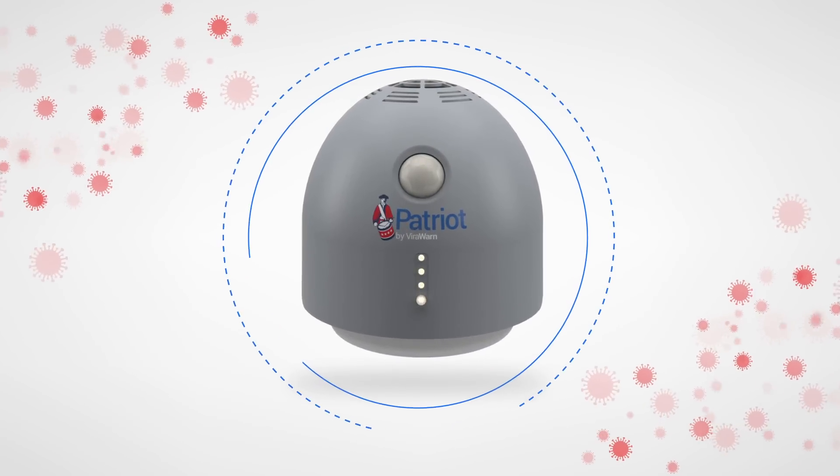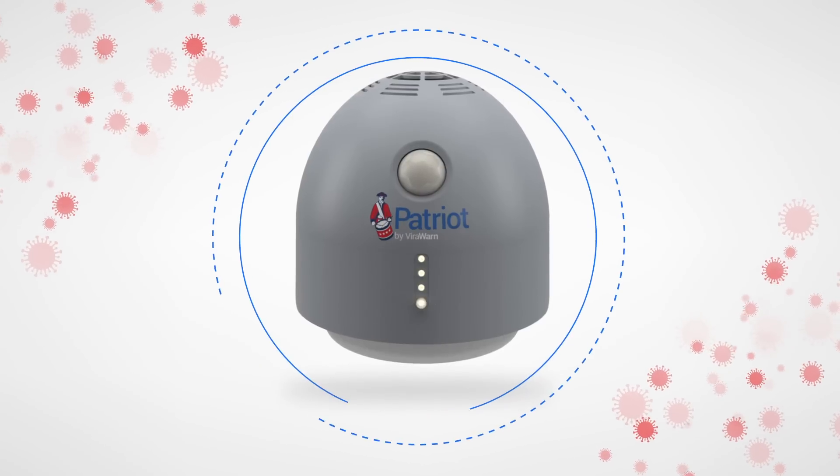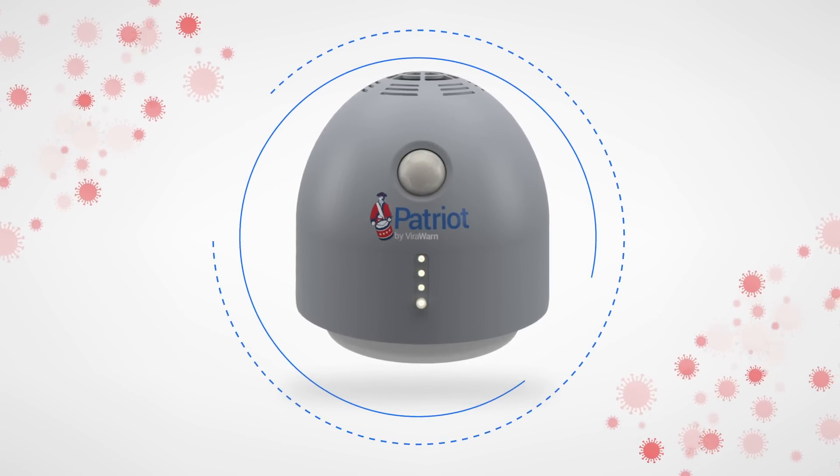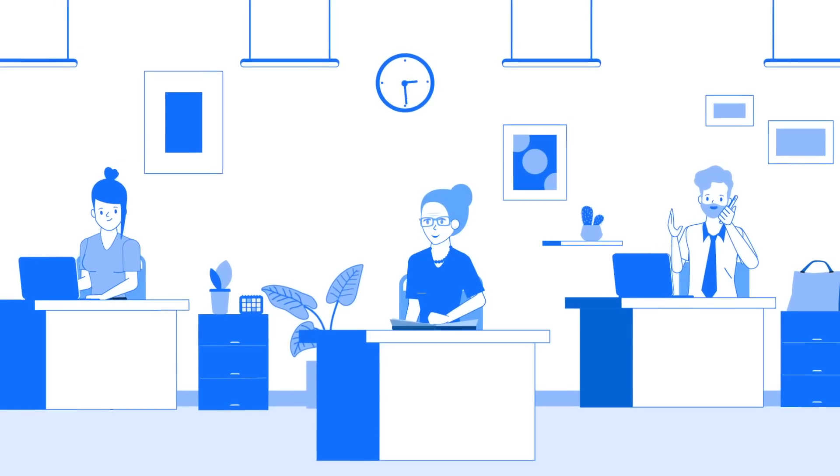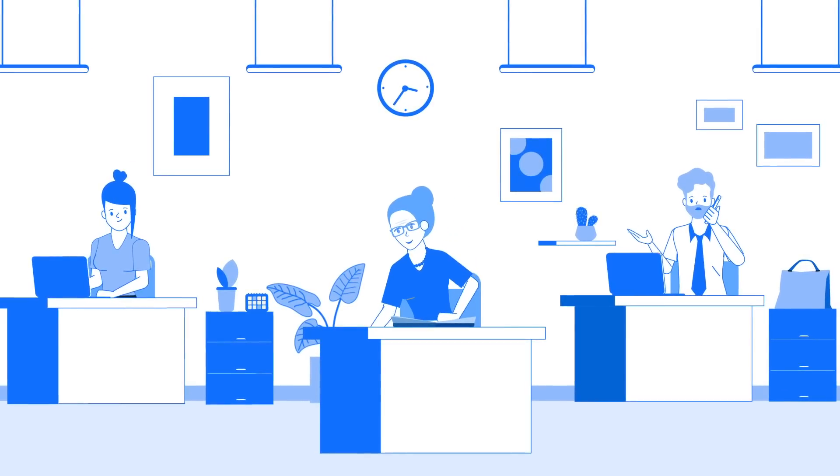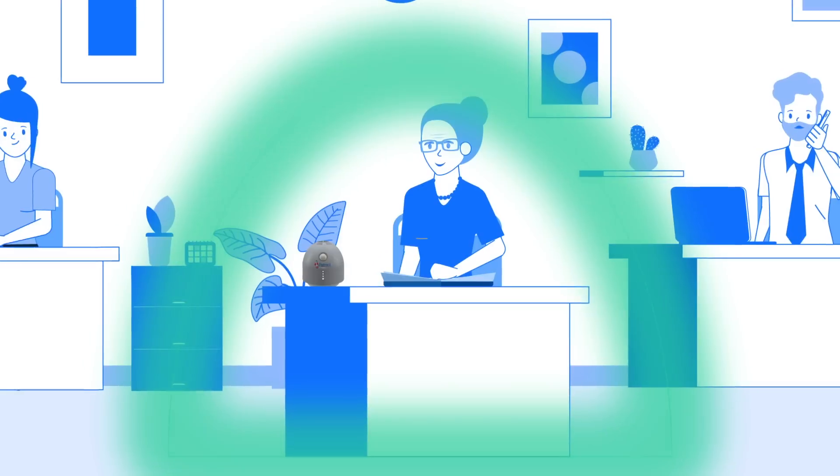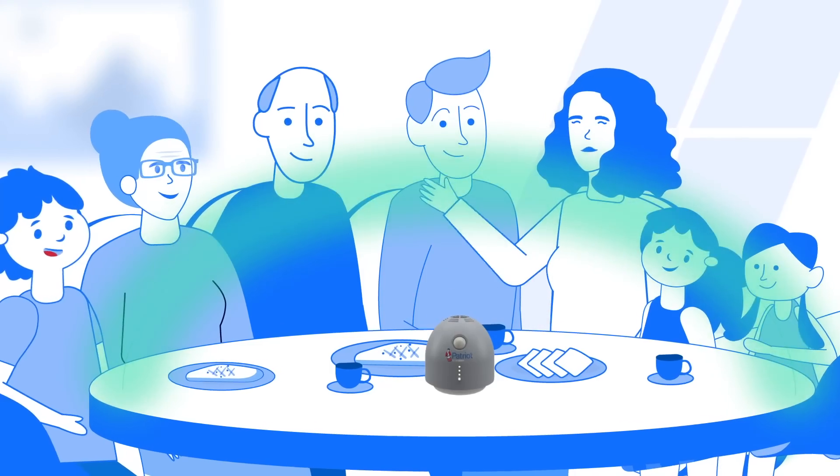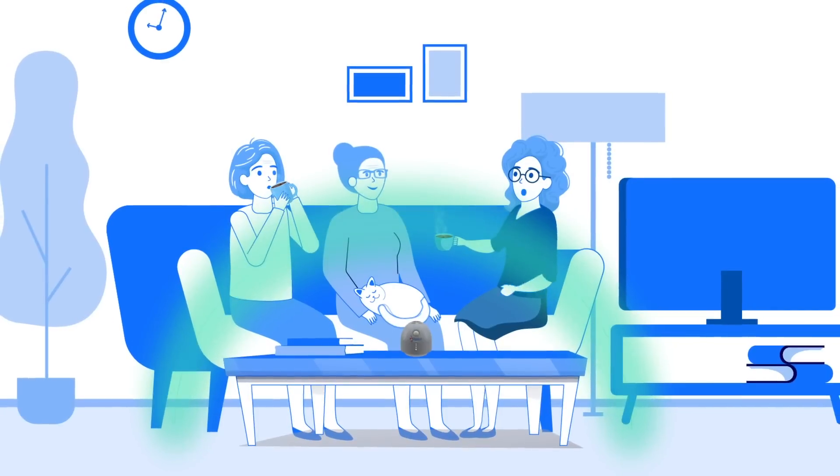Patriot by VireWarn is a tabletop device that instantly detects COVID-19 in your personal spaces. Patriot by VireWarn is designed to monitor your personal space such as at your desk at work or at home, on your dining table or coffee table while having visitors over.